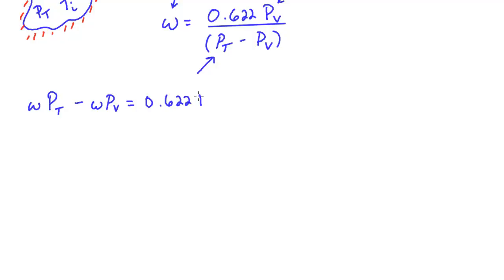I get omega times the total pressure minus omega times the partial pressure of vapor, and that's still equal to the numerator of that fraction. And if I now move this to the other side, that becomes a positive, and I pull out the PV, that ends up being like this, and that's still equal to omega times the total pressure. And now we just need to divide both sides by this term in parentheses, and so you get partial pressure of vapor is equal to omega times the total pressure divided by 0.622 plus omega.